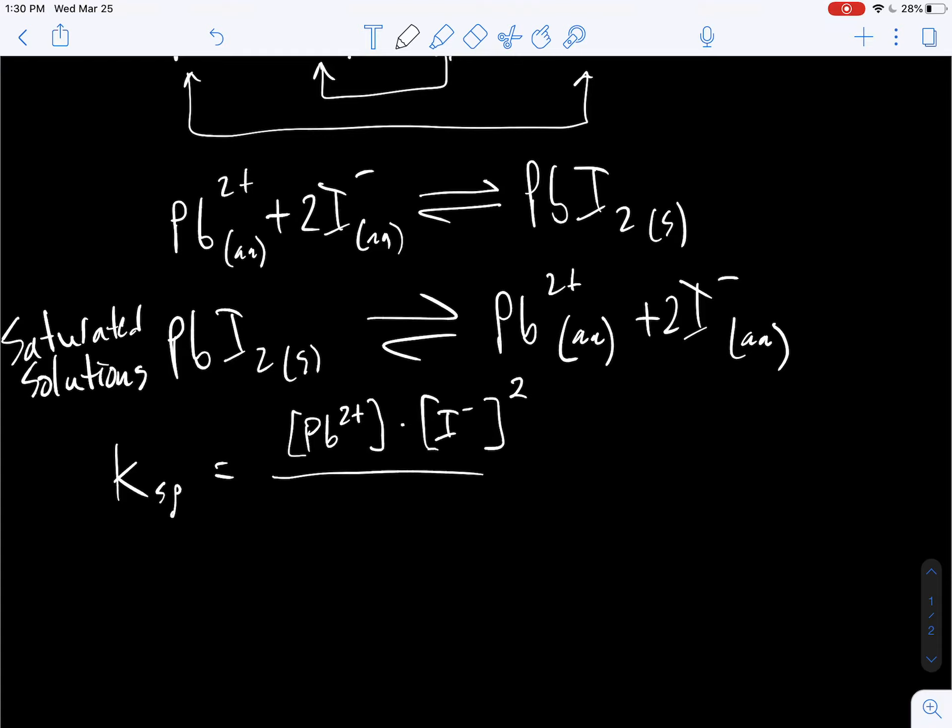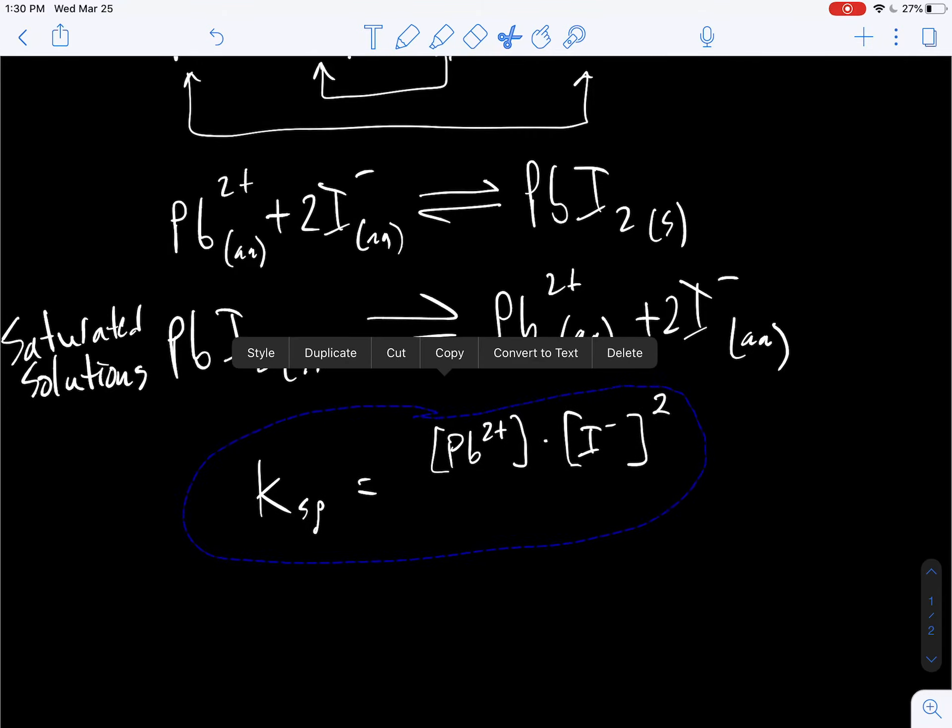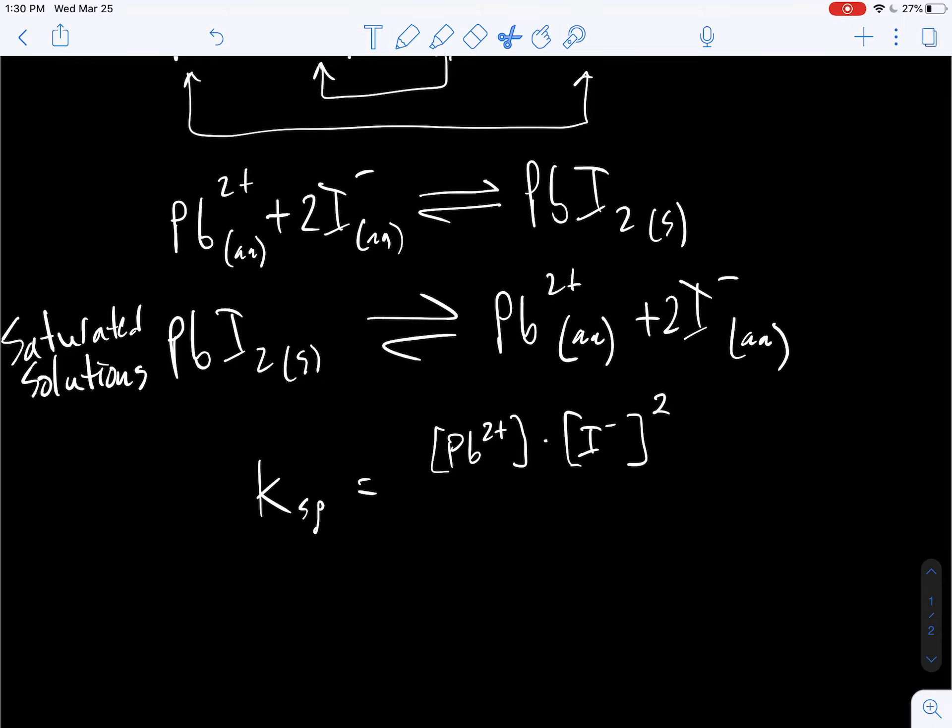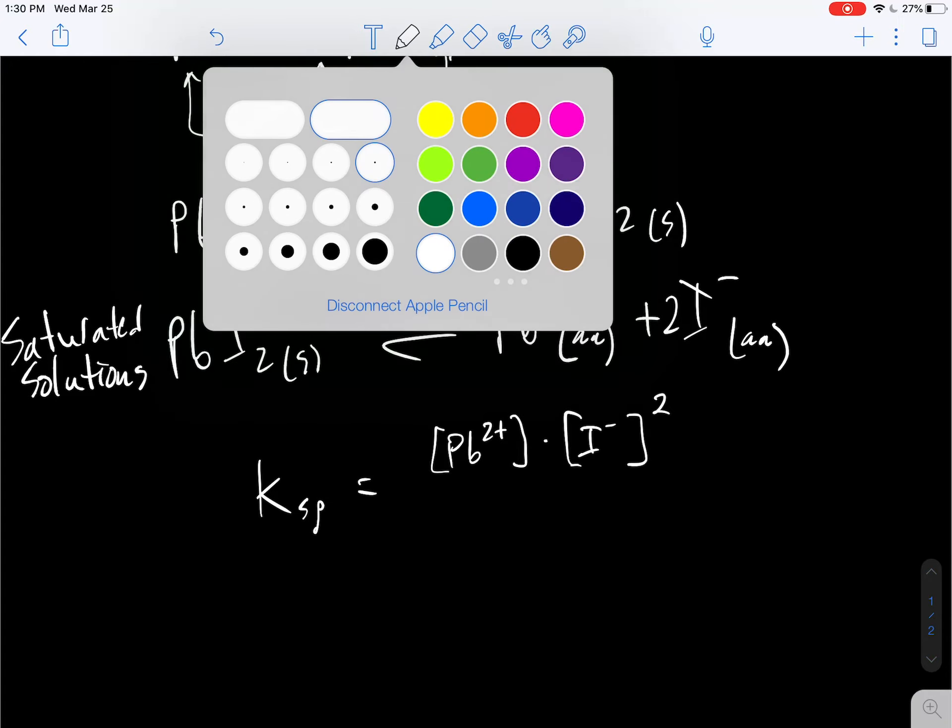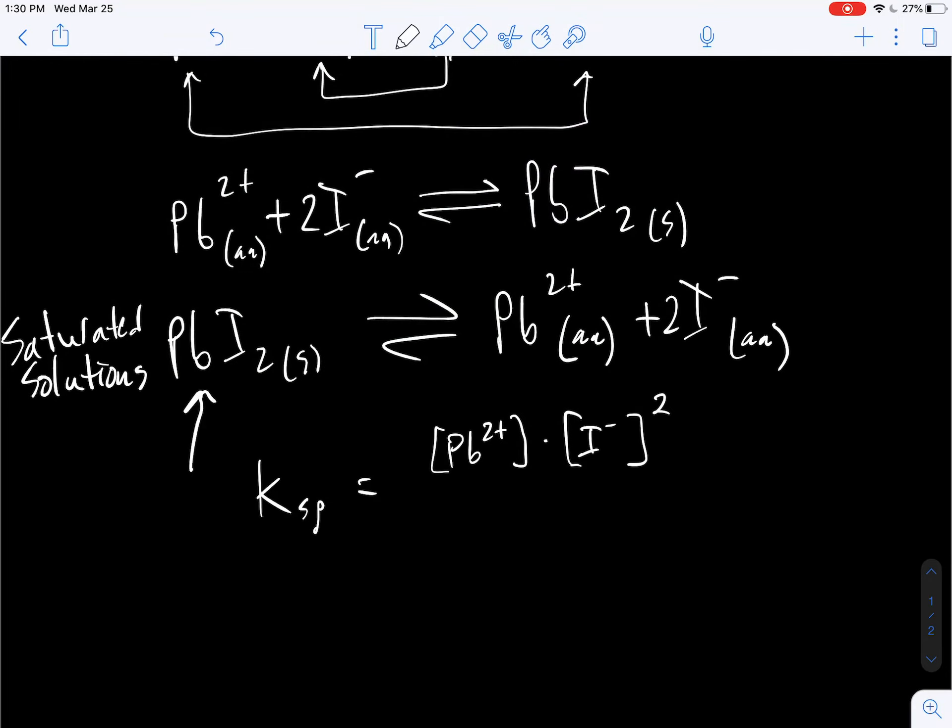Now, we do not include anything on the bottom. This is a heterogeneous equilibrium. So the solid is not included. So this is the Ksp. And that's why we call it the solubility product. It's just the product of the dissolved species at equilibrium. So since this is a solid, we pretty much think of that as not changing its concentration. So we leave it out of our equilibrium expression. So simply put, that is the Ksp value.